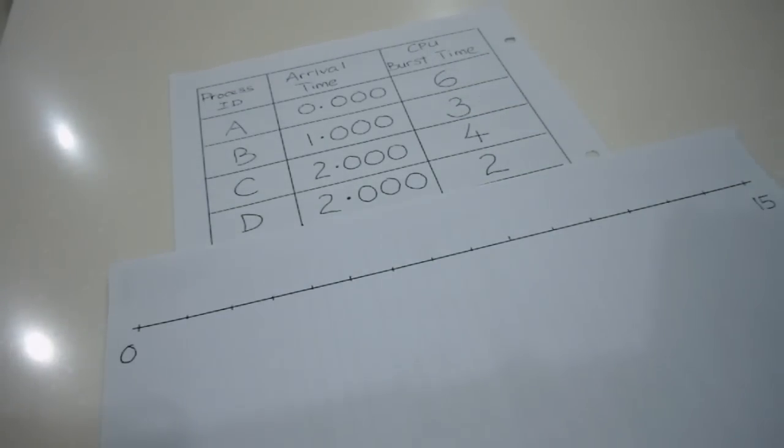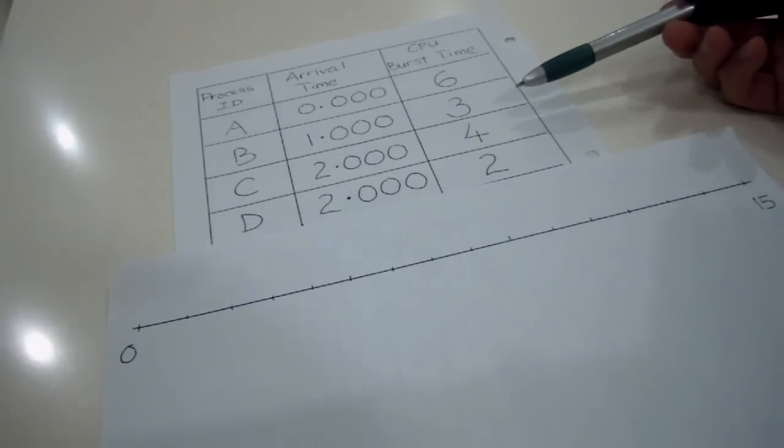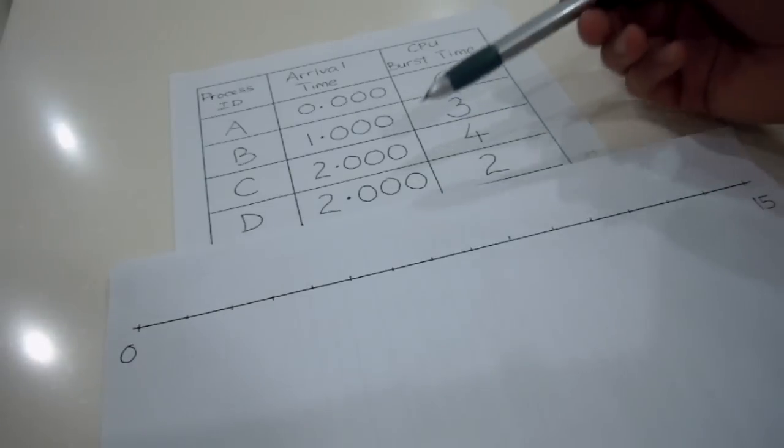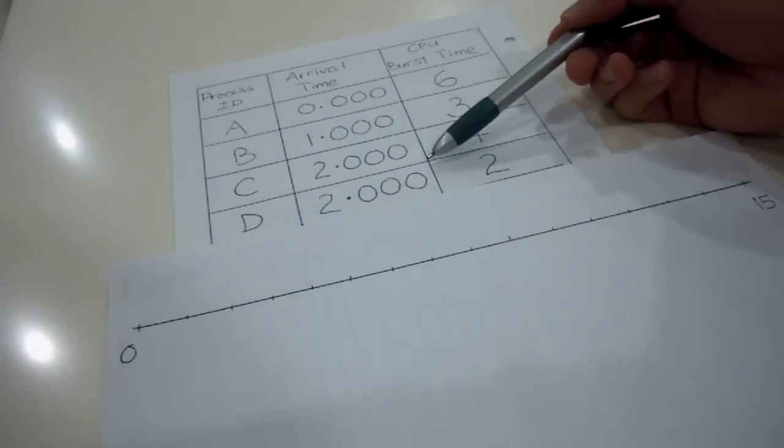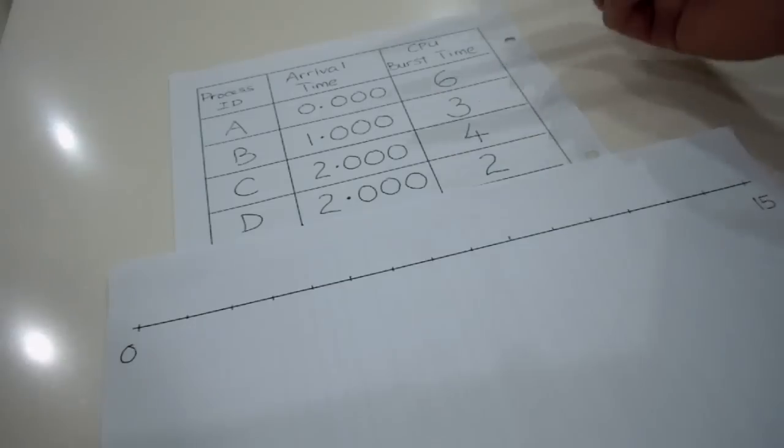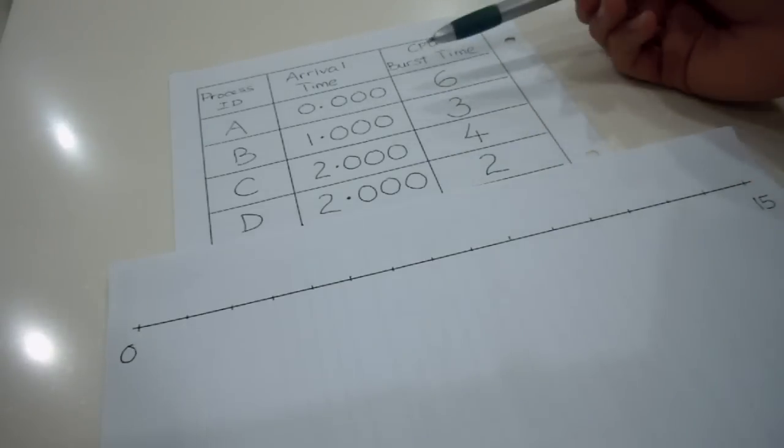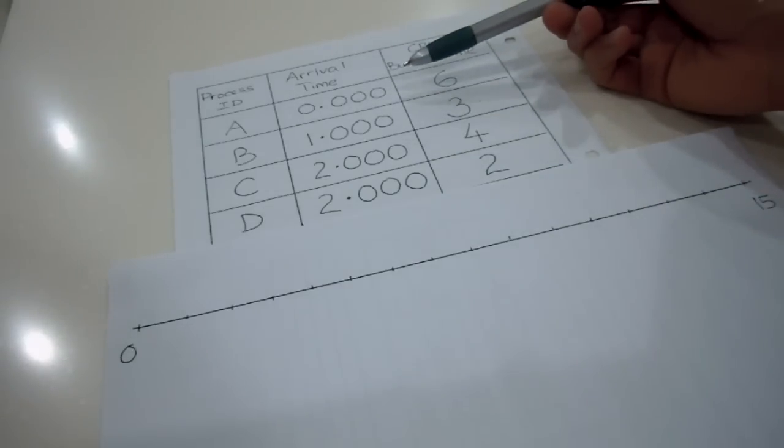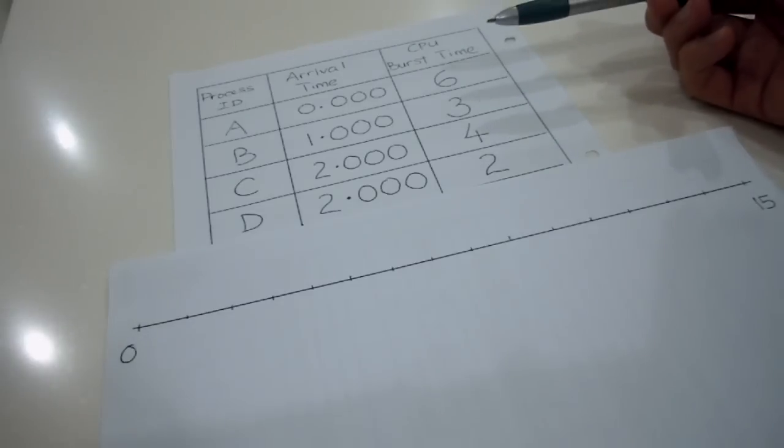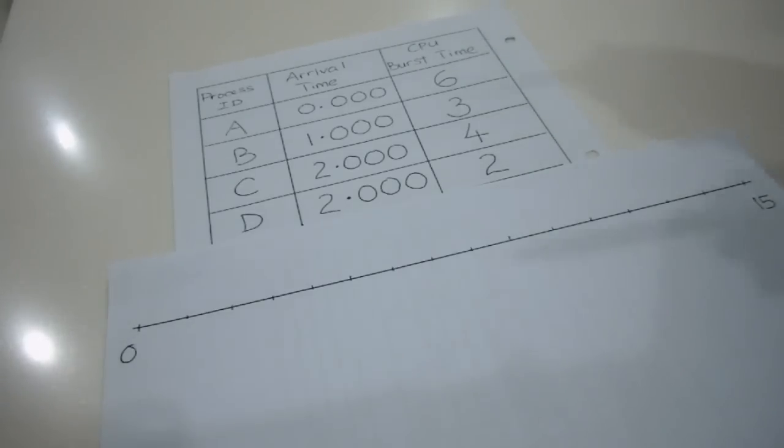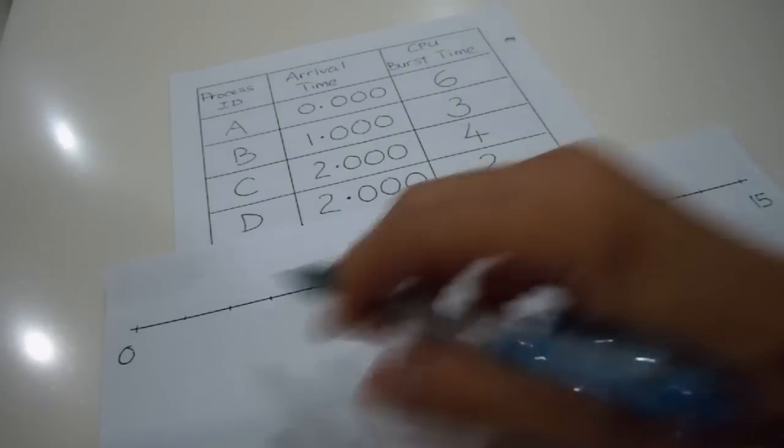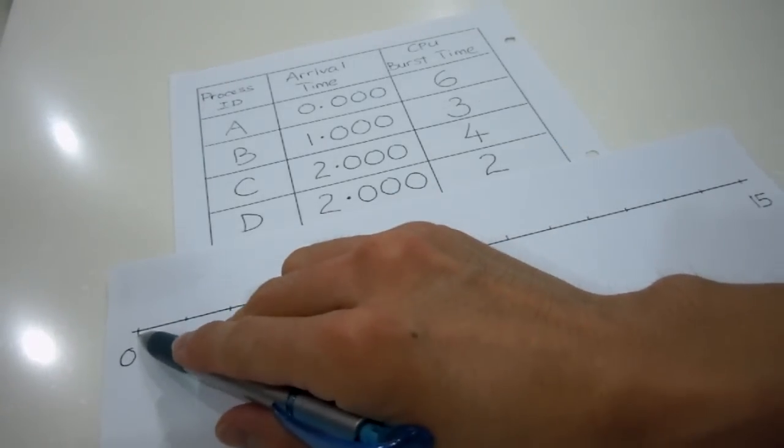So, wait a minute, you see that at time equals 0, D actually hasn't arrived. The only process that arrived at time equals 0 is actually A. So no doubt that A has to be going first in this case. So let's put in A as the starting point here.